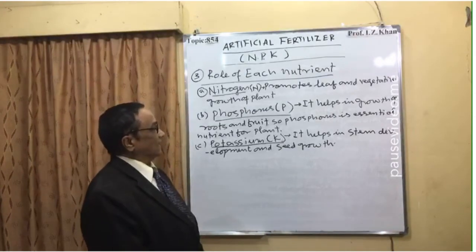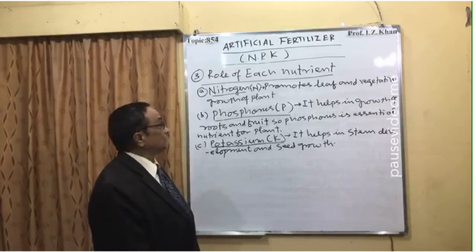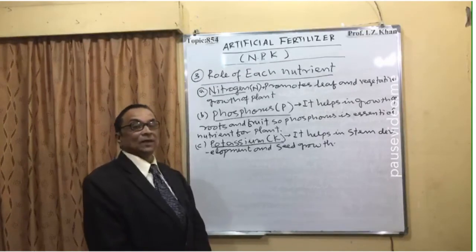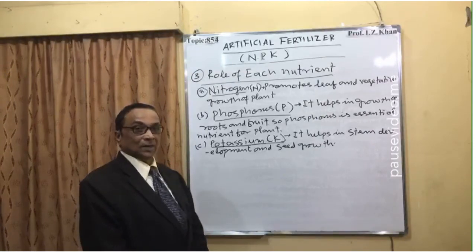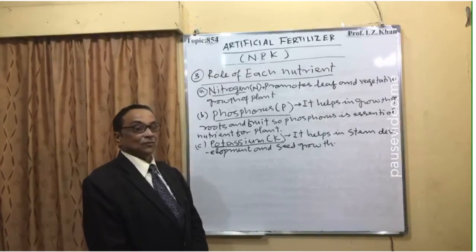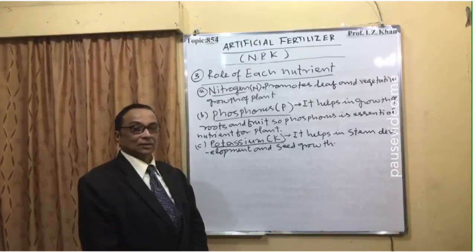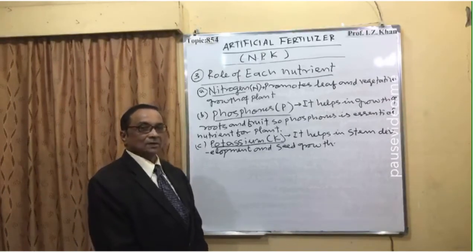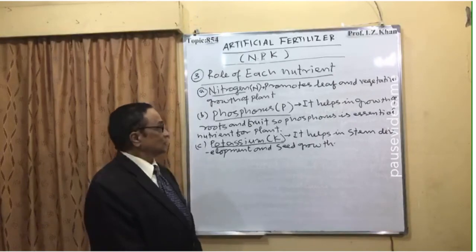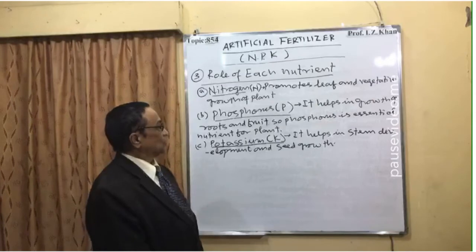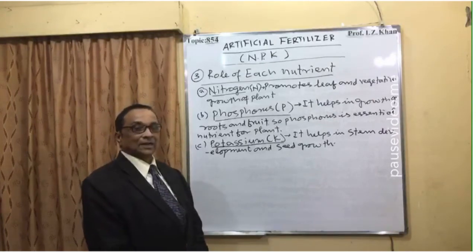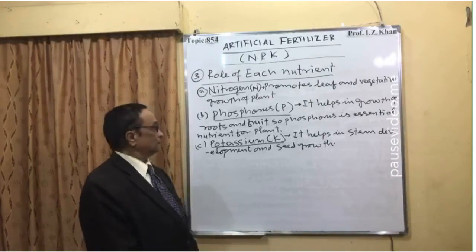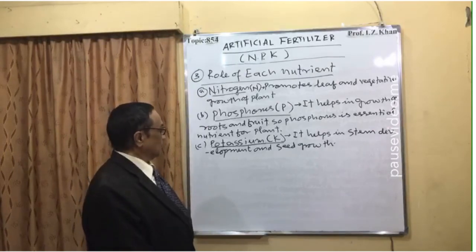Second, phosphorus helps in the growth of roots. If there is a deficiency of phosphorus, the underground root system will not develop well. This is especially important for crops like groundnut, which grow underground. If phosphorus is low, the production of groundnuts will be affected. Phosphorus is an essential nutrient for healthy root growth.